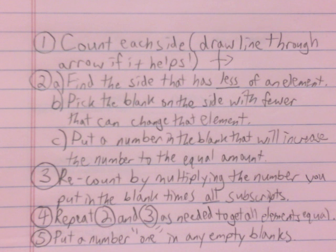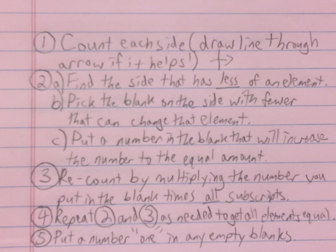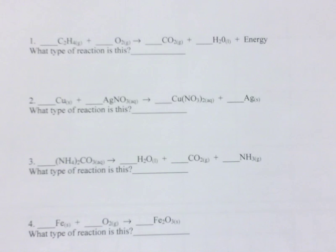Step three: after you put a number in a blank, recount by multiplying the number you put in the blank times all the subscripts that come directly after it in the chemical formula. One blank modifies whatever comes right after just that blank. Recount everything to see what you fixed. Step four: repeat steps two and three as many times as needed to get all elements equal. Step five: put a one in any empty blanks that are left over.